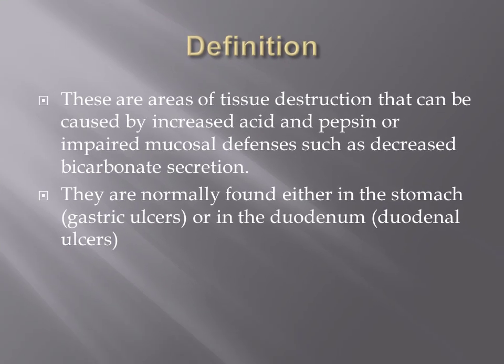Peptic ulcers are areas of tissue destruction that can be caused by increased acid and pepsin, or impaired mucosal defenses such as decreased bicarbonate secretion. They're normally found either in the stomach or in the duodenum.